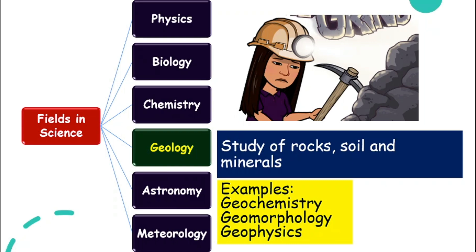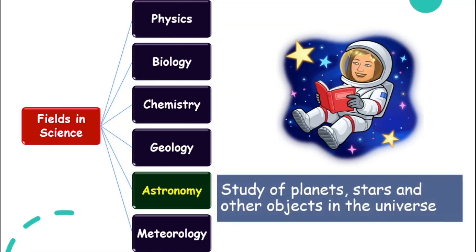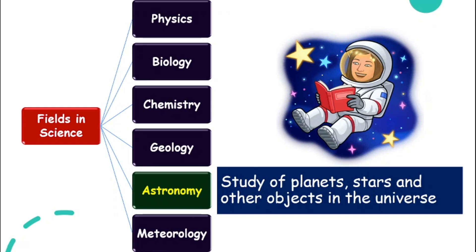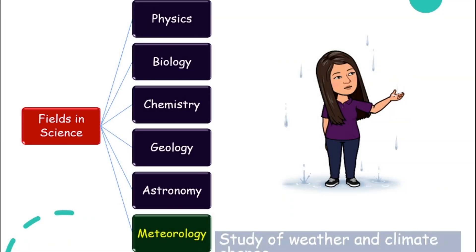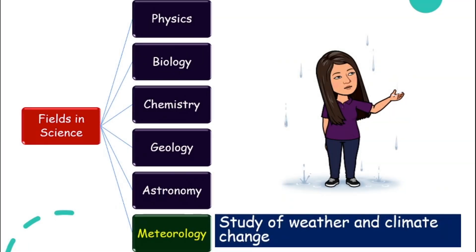For example, geochemistry, geomorphology, geophysics. And astronomy is exciting studies of planets, stars, and other objects in the universe. And the example will be astrophysics. Meteorology are the fields where people study weather and also climate change. For example, hydrometeorology.